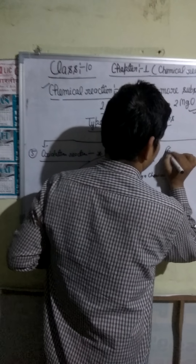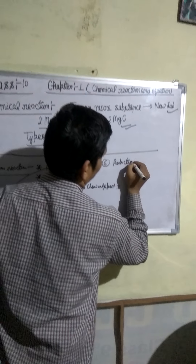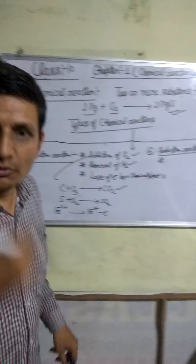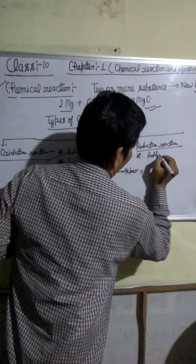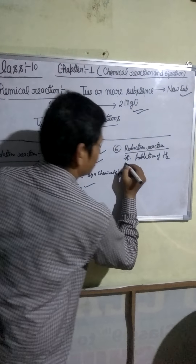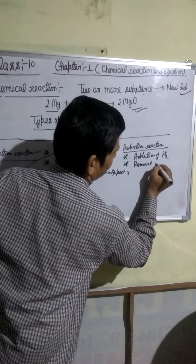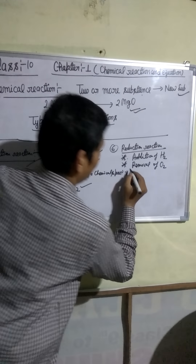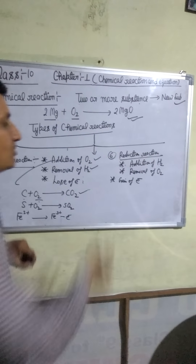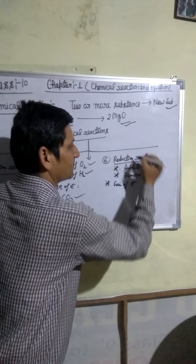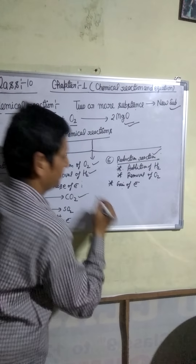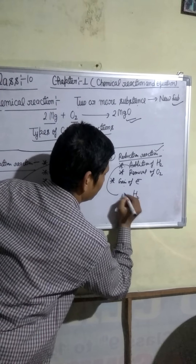Number six is reduction reaction. These also have three definitions. First: addition of hydrogen to a substance is called reduction. Second: removal of oxygen from a substance is called reduction. Third: gain of electron by a chemical species is called reduction. For example, addition of hydrogen: H₂ + S → H₂S.